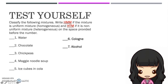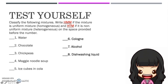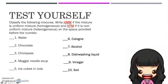Number seven: Alcohol. Number eight: Dish washing liquid. Number nine: Vinegar. And number ten: Soil. Have you written all your answers?